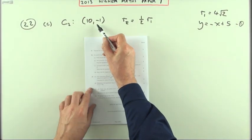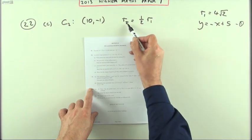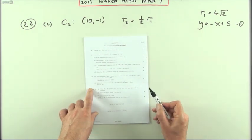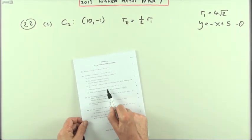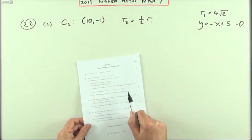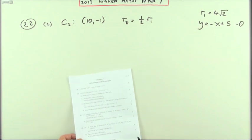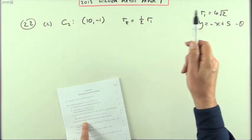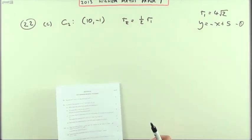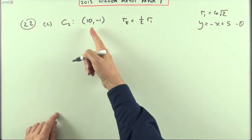And for part C, a second circle has got the centre 10 negative 1, its radius is a half of the first radius, you have to find this equation in the expanded form, and it's quite handily given you that, so you can check your answer, but that wasn't really for you, that was for the marker, so that when it came to the last part, and you had to show that this line was a tangent to it, it's all going to work out nicely. Well, what have we got?